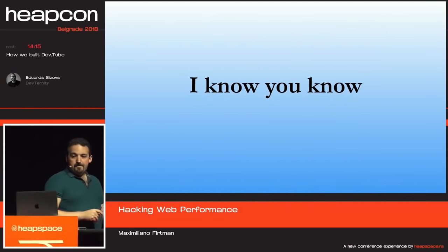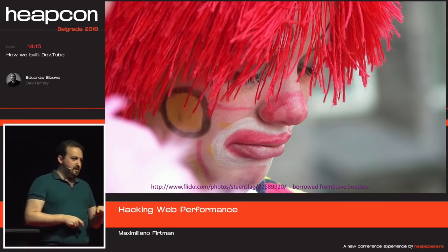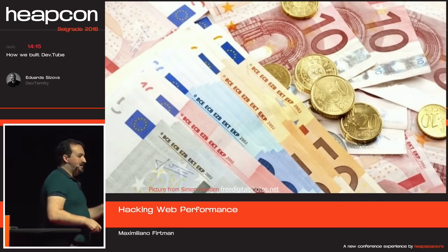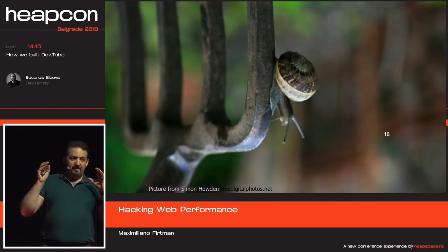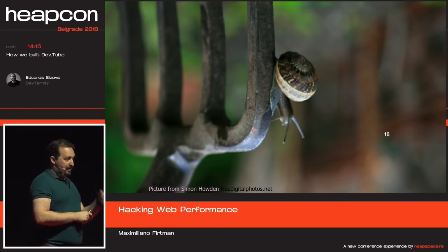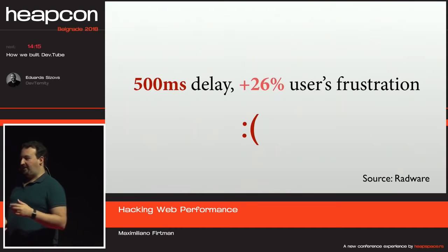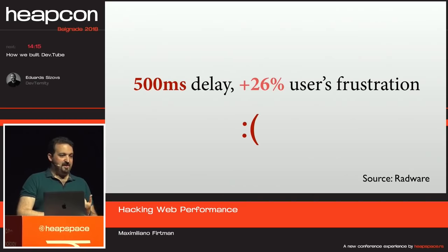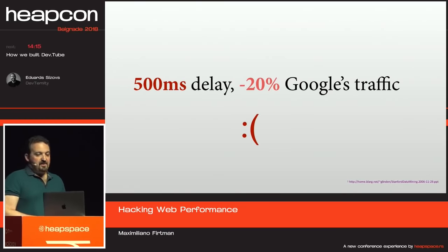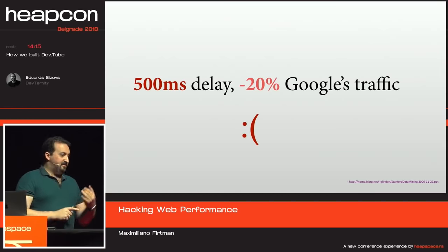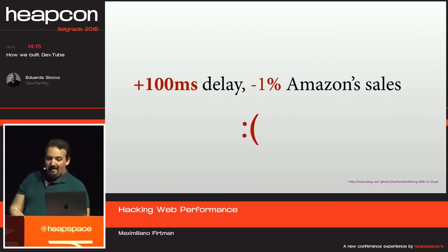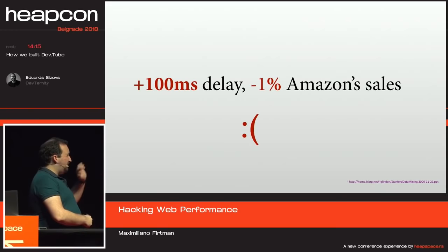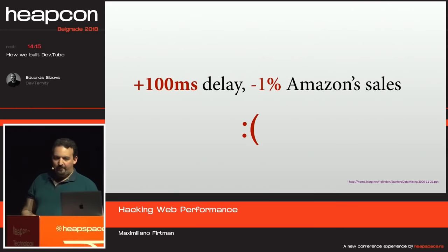Your users are currently not happy and you are probably losing money — you, your customers, or your clients — because of poor performance, because the web is slow. Your website is slow. Half a second delay increases user frustration by 26%. Half a second delay is also reducing Google's traffic, which means lost ad revenue. 100 milliseconds of delay will decrease Amazon's sales by 1%.